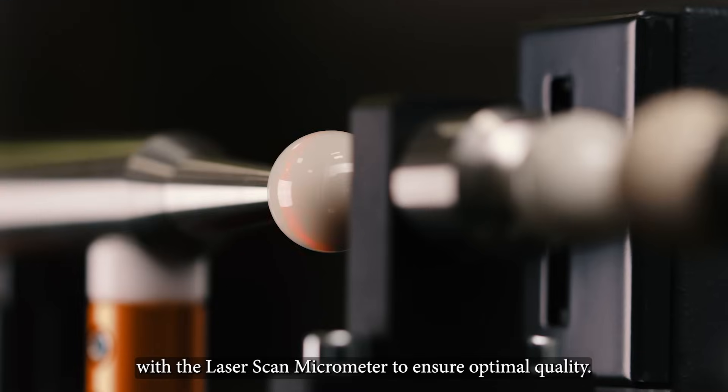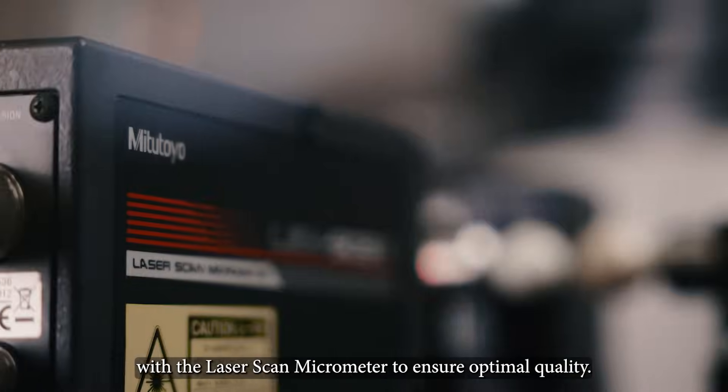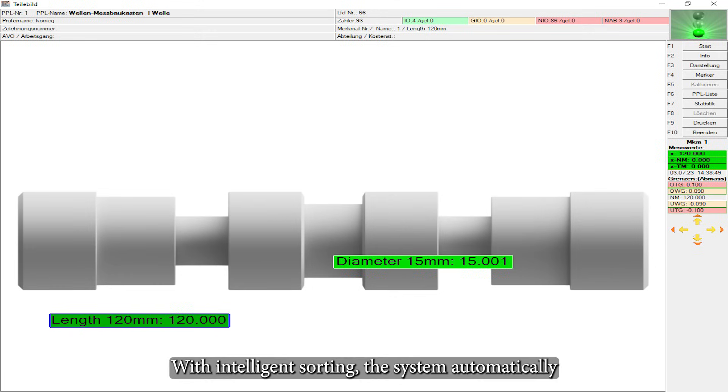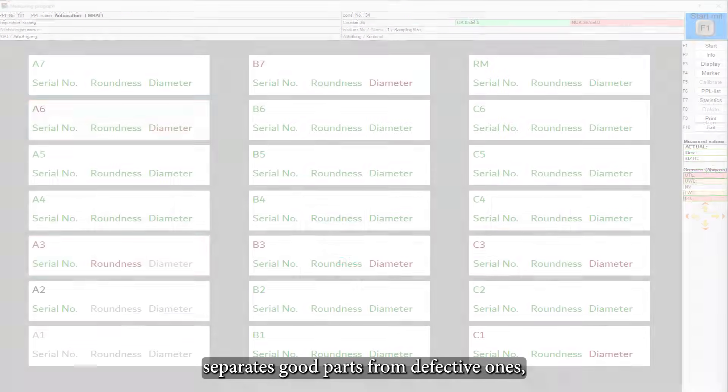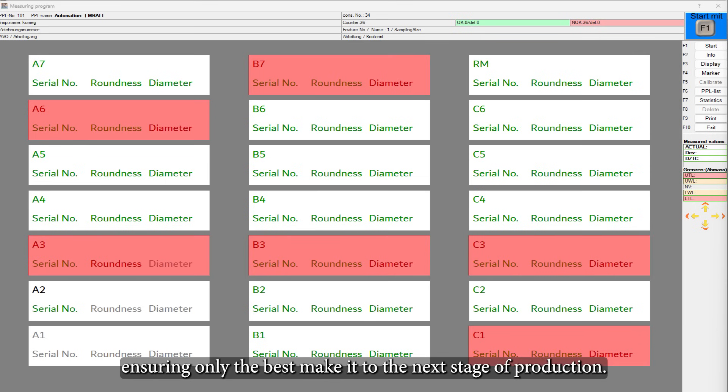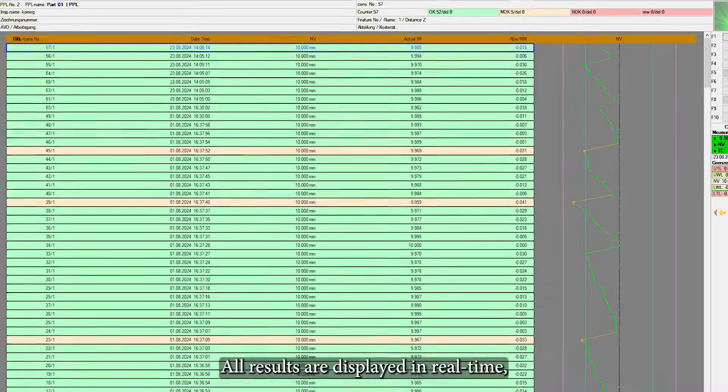With intelligent sorting, the system automatically separates good parts from defective ones, ensuring only the best make it to the next stage of production. All results are displayed in real-time, allowing for quick decision-making.